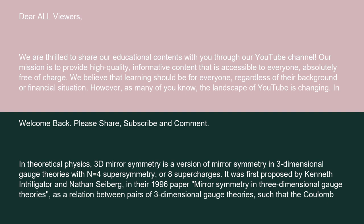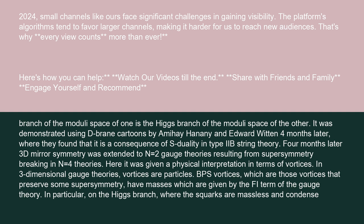In theoretical physics, 3D mirror symmetry is a version of mirror symmetry in three-dimensional gauge theories with N equals four supersymmetry, or eight supercharges. It was first proposed by Kenneth Intriligator and Nathan Seiberg in their 1996 paper 'Mirror Symmetry in Three-Dimensional Gauge Theories,' as a relation between pairs of three-dimensional gauge theories such that the Coulomb branch of the moduli space of one is the Higgs branch of the moduli space of the other.